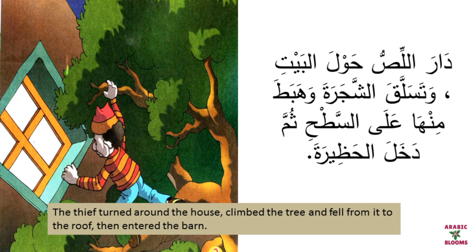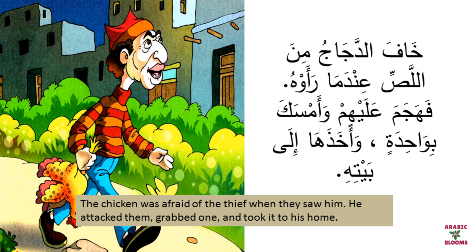دار اللص حول البيت وتسلق الشجرة وهبط منها على السطح ثم دخل الحظيرة. The thief circled the house, climbed the tree, came down onto the roof, then entered the barn. خاف الدجاج من اللص عندما رأوه فهجم عليهم وأمسك بواحدة وأخذها إلى بيته. The chickens were afraid when they saw him, so he attacked them, grabbed one, and took it to his house.